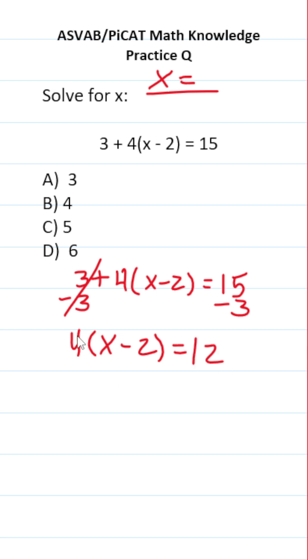Do we have to take this 4 and multiply it out to the x and negative 2? We don't have to do that. We can go ahead and divide both sides by 4 in this case. In doing so, that leaves you with x minus 2 over here. 12 divided by 4 is 3.